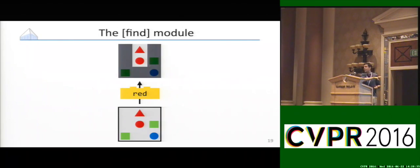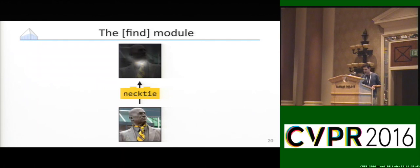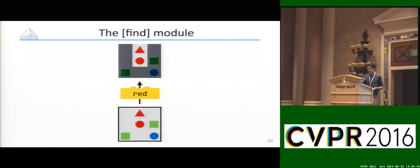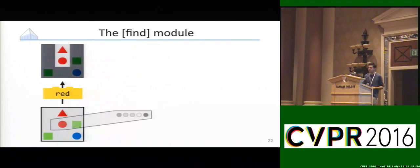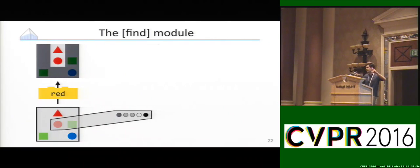One kind of module is the find module that produces an initial attention to the world. This needs to work on natural images as well. It's basically the standard attention mechanism. We start by coming up with a convolutional feature representation of a region of our input image. We take that feature representation and concatenate it together with a module-specific parameter vector associated with some word from the input question.